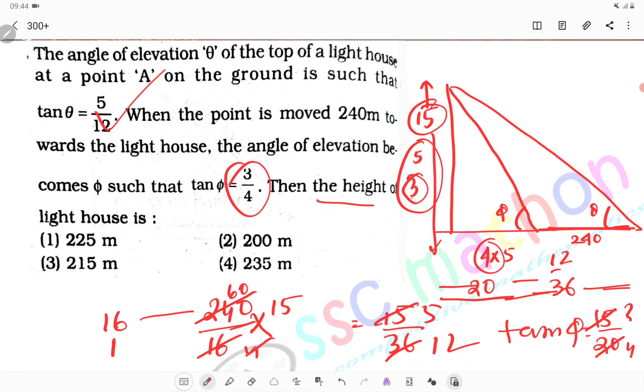4, 15, 60, 15, 15, 225. Option number 1 is the correct answer.